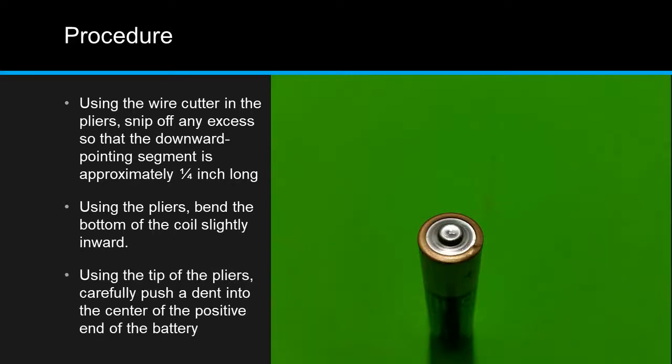Using the tip of the pliers, carefully push a small dent into the center of the positive end of the battery. This will provide a place for the top of your coil to rest and prevent it from slipping off.